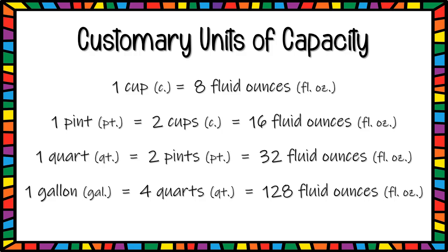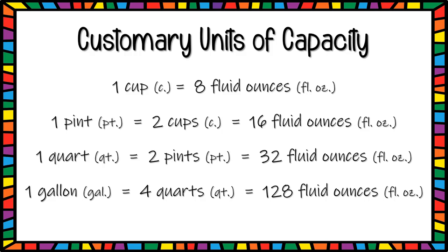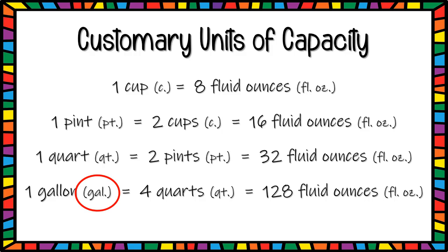Look carefully at the abbreviations used to represent each one of these units. To represent cups, we use 'c'. To represent fluid ounces, we use 'fl oz'. To represent pints, we use 'pt'. To represent quarts, we use 'qt'. To represent gallons, we use 'gal'.